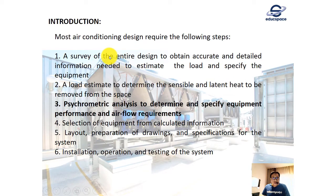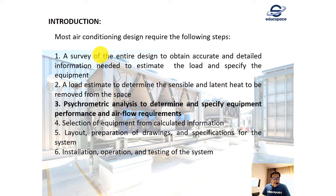Most air conditioning design requires the following steps. First, designers need to conduct a survey of the entire design to obtain accurate and detailed information needed to estimate the load and specify the equipment. Number two, after the survey, we have to do the load calculation to determine the sensible and latent heat to be removed. Next is psychrometric analysis to determine and specify equipment performance and air flow rate — and this is the stage we are currently at.